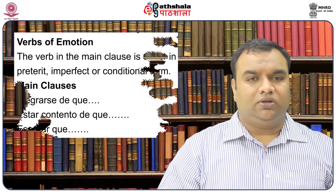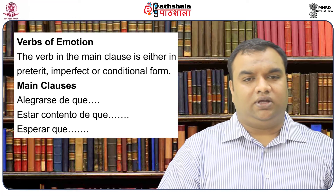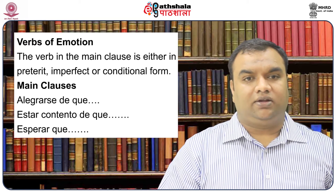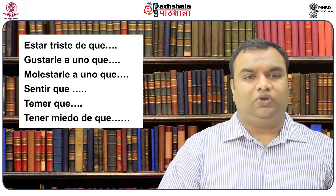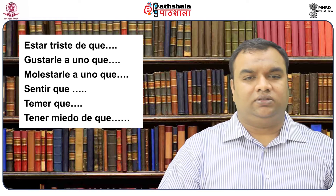Coming to the next set is that of verbs of emotion. The verb in the main clause is either in the preterit, imperfect, or conditional form, and it expresses hope, happiness, sadness, surprise, fear, or regret with regard to other people, and will require the imperfect subjunctive mood in the dependent clause. The main clauses include: alegrarse de que, estar contento de que, esperar que, estar triste de que, gustarle a uno que, molestarle a uno que, sentir que, temer que, tener miedo de que.